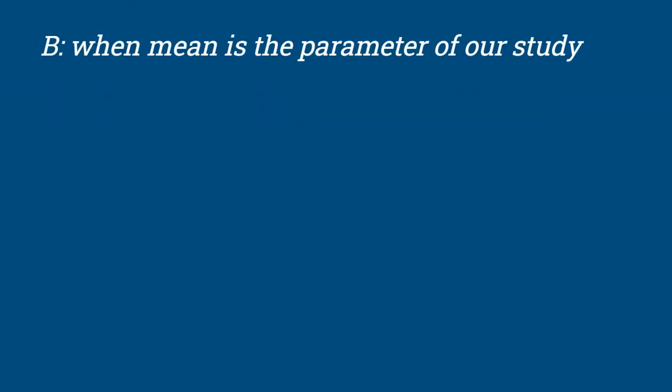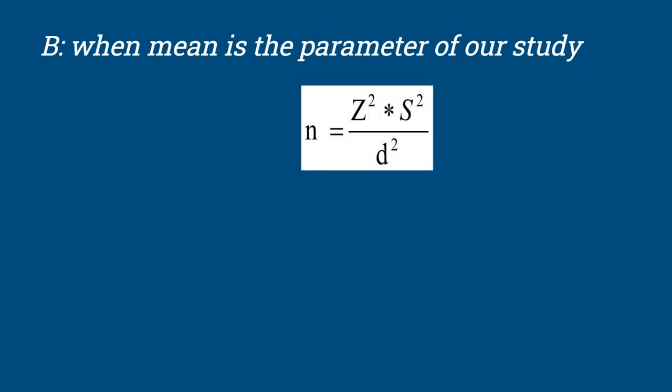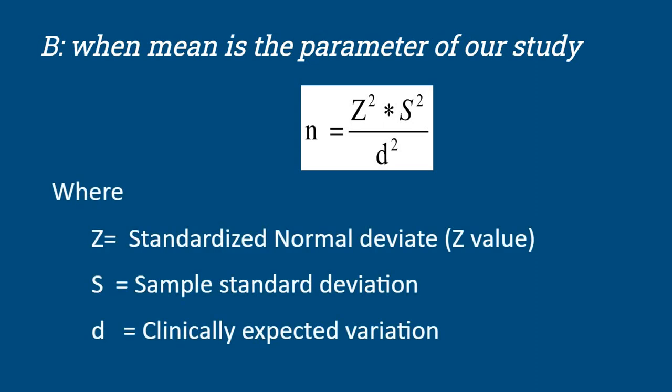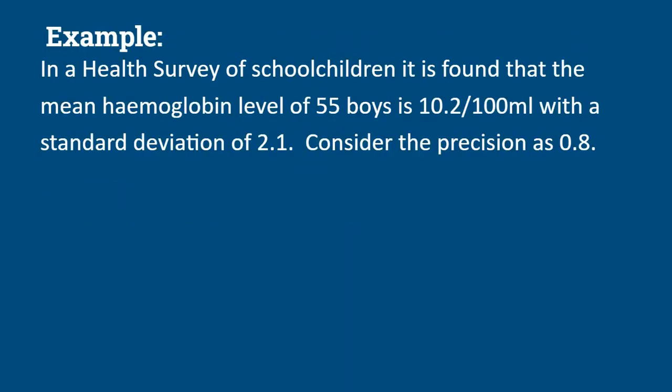When mean is the parameter of our study, the formula is N = Z² × S² / D², where instead of PQ we have the standard deviation squared divided by D squared. Z is the standard normal deviate, S is the sample standard deviation, and D is the clinically expected variation or precision between the means.